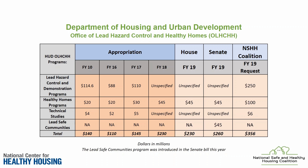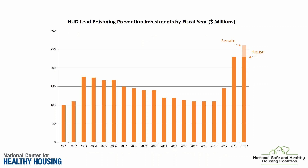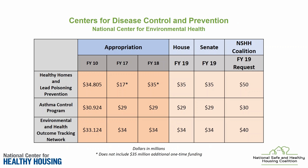This year in fiscal year 2019, both the House and Senate bills want to at least keep that number where it is — the House keeping it at $230 million and the Senate proposing to increase it to $260 million. We'll see if the Senate's proposed increase gets carried forward. At CDC, we also saw the increase from $17 million to $35 million, getting back up to where it had been before 2012. We also saw level funding for the asthma program and the tracking network. Both House and Senate bills look to keep level funding going forward.